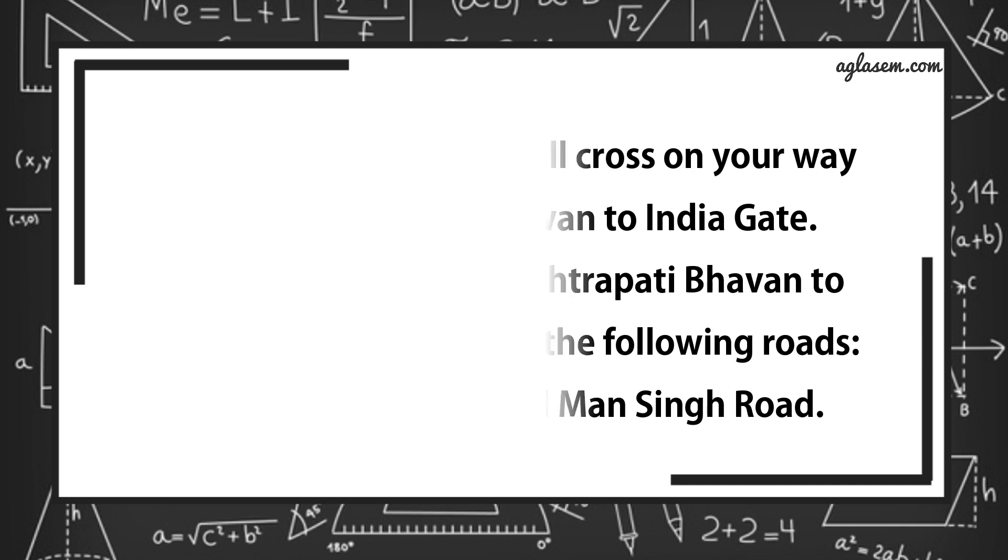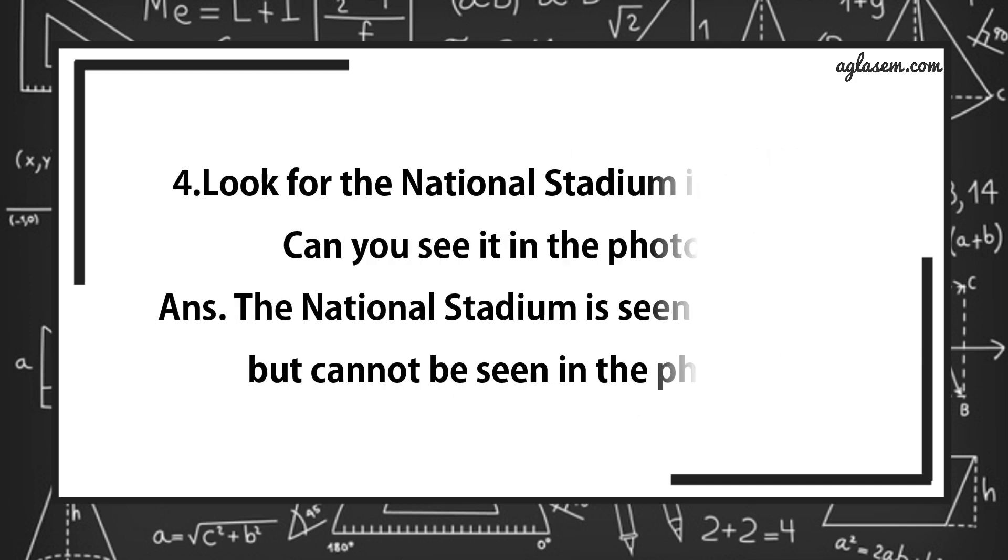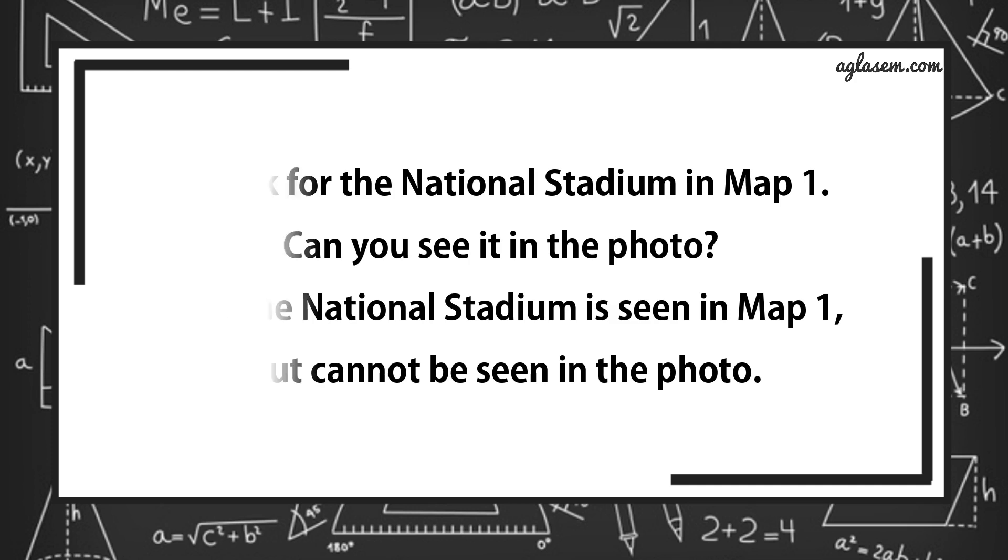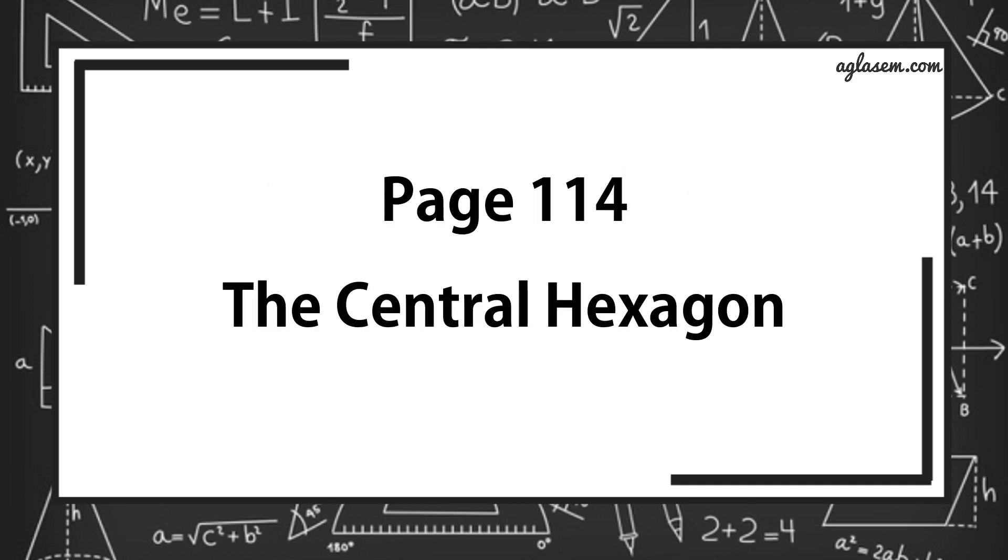For question number 4 says, look for the national stadium in map 1. Can you see it in the photo? Answer is, the national stadium is seen in map 1 but cannot be seen in the photo. Now turn to page number 114, the central hexagon.